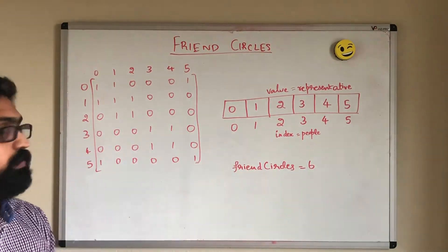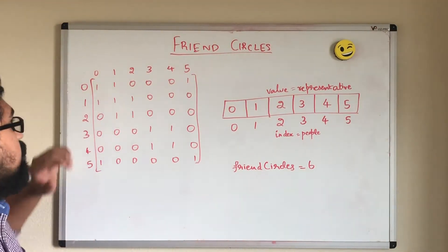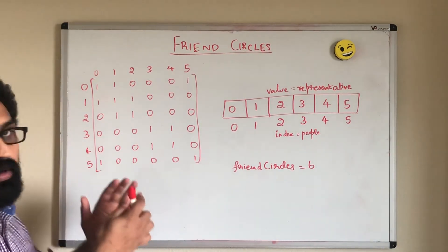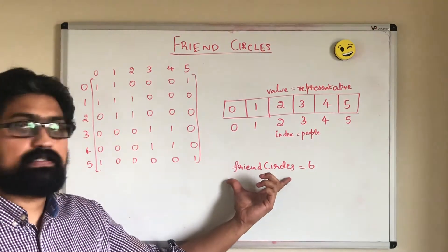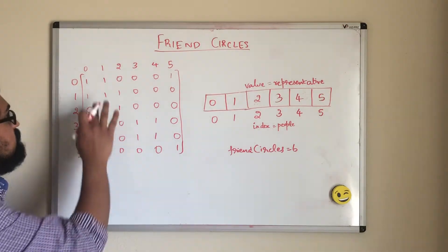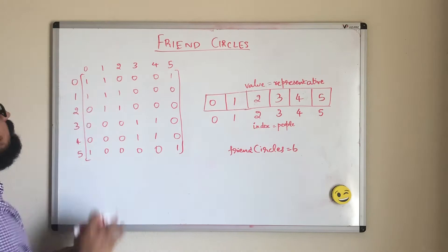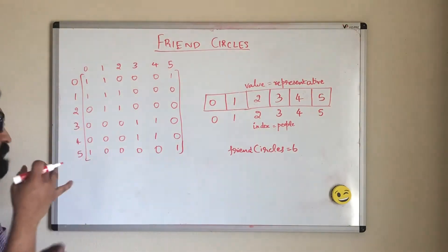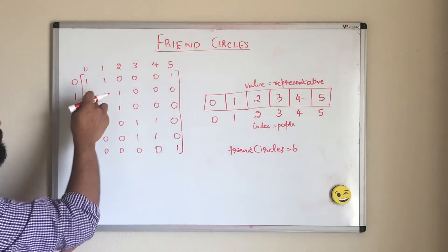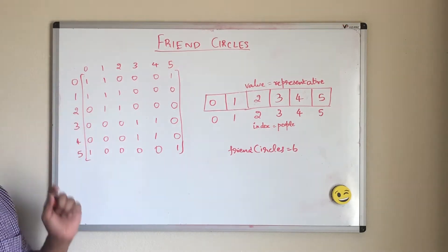Now let's see how this works. The idea is pretty simple — we iterate through the matrix. Whenever we encounter a 1, that means those two people are friends, so we group them together into one friend circle and decrease the friend circle count. Let's start with the first element: row 0, column 0. Since row and column indexes are the same, it represents the same person, so we don't have to do any processing. Similarly, all diagonal elements represent a single person and require no processing.